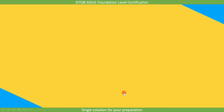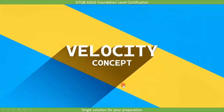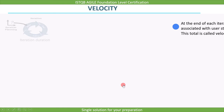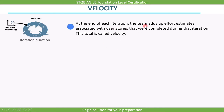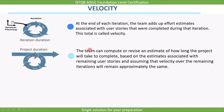Now we are going to cover an important concept: velocity. At the end of each iteration, the team adds up effort estimates associated with user stories that were completed during that iteration — this is called velocity. Once the velocity is known, the team can compute or revise an estimate of how long the project will take to complete, based on the estimates associated with remaining user stories and assuming that velocity over the remaining iterations will remain approximately the same.